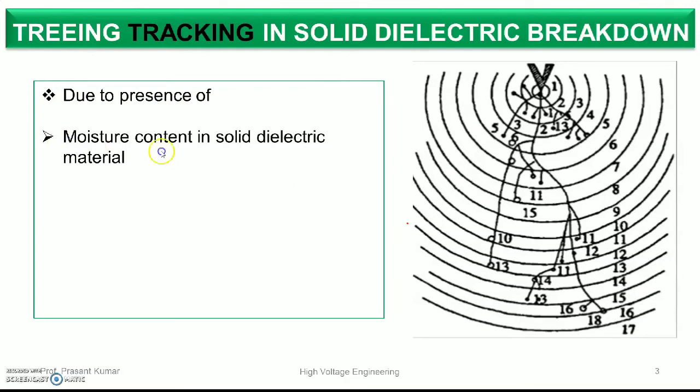If moisture content is present in the solid dielectric material, the dielectric strength definitely deteriorates. In that case, sparking occurs, internal discharges occur, and due to this, treeing occurs. And when we track that path, that process is called tracking.